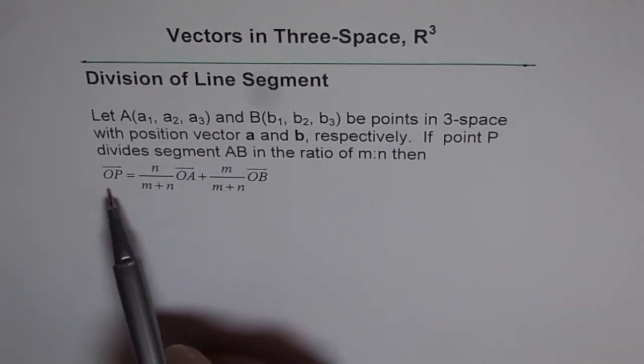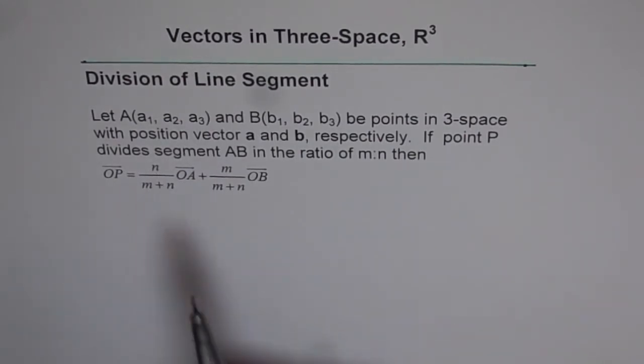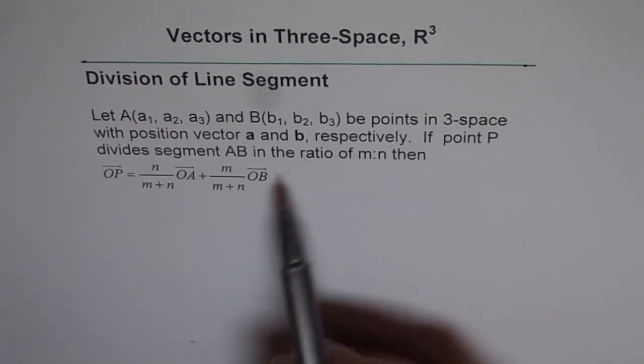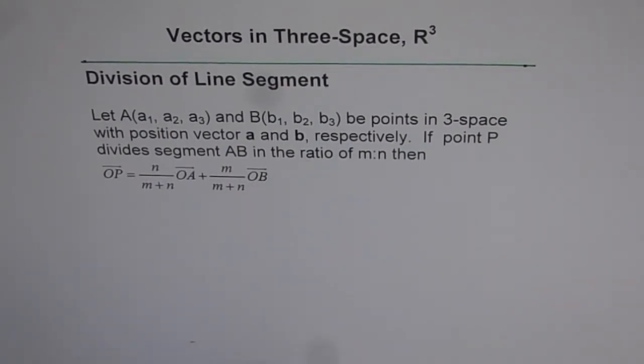Then OP equals N divided by M plus N times OA plus M divided by M plus N times OB. So it is kind of a theorem and it is always true.